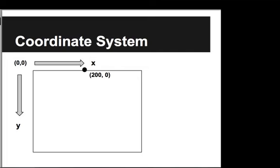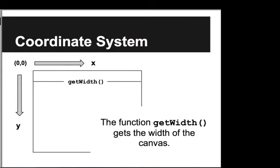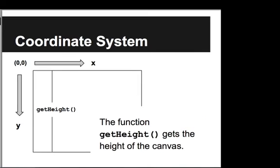As another example, the point (200, 0) is over 200 in the positive x direction and down 0 in the y direction. There are a few other important properties of the canvas — for example, the width. We can use a function called getWidth to get the width of the canvas, and similarly getHeight to get the height.